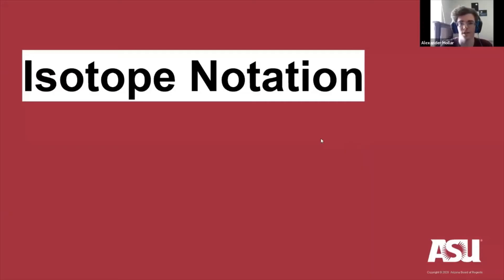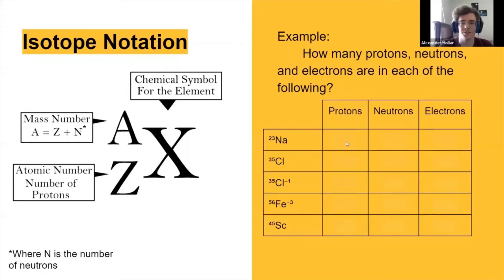All right, so going on, we're going to talk about isotope notation, and isotope notation is just a way of writing out how many protons, neutrons, and electrons are in an element.